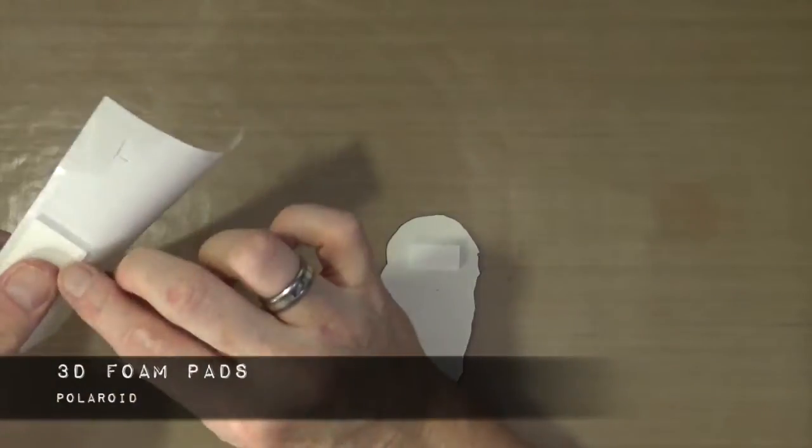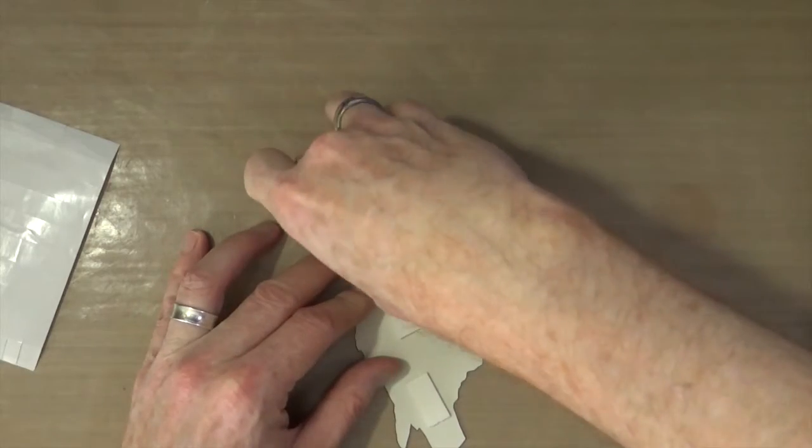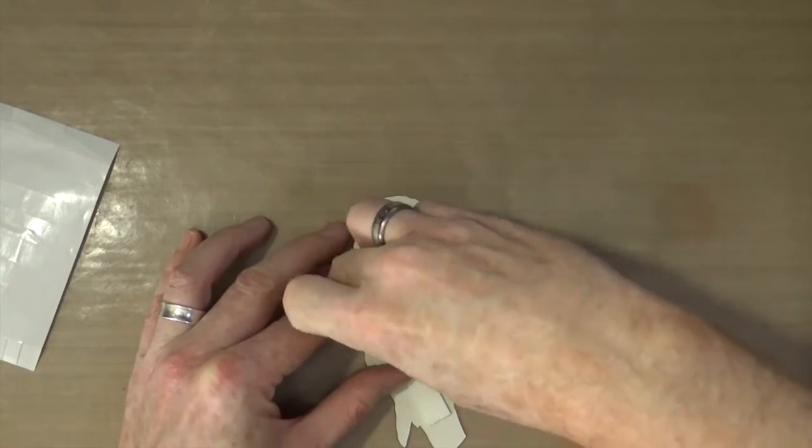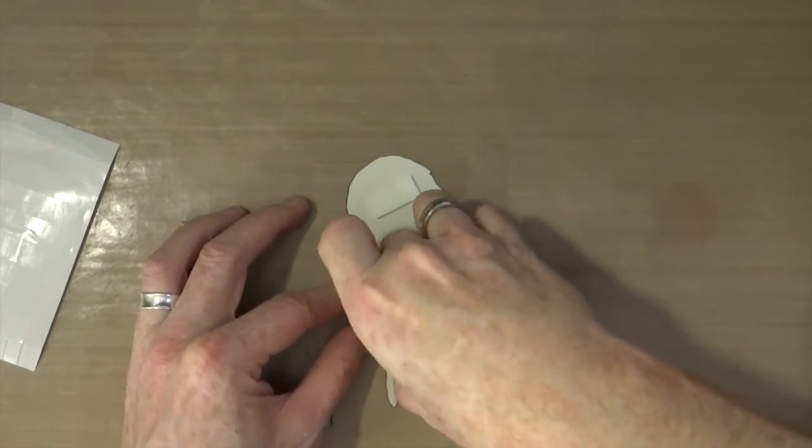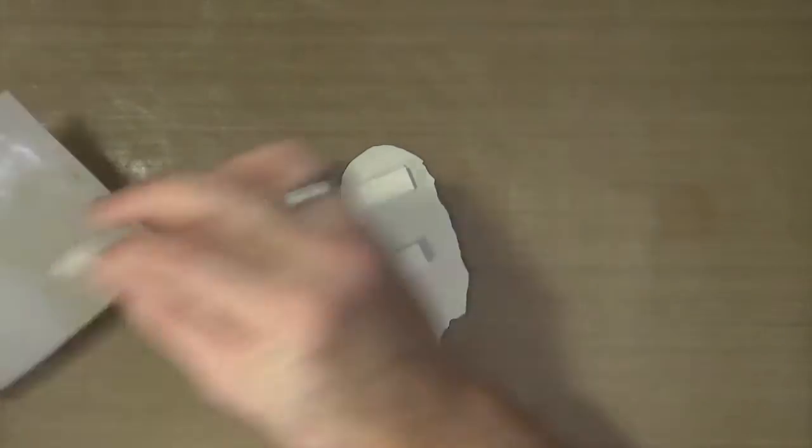Because I want my owl to look dimensional, I'm adding foam pads to the back. Rather than just one set, I'm putting a double layer of foam pads to make sure it stands off the canvas a bit further.